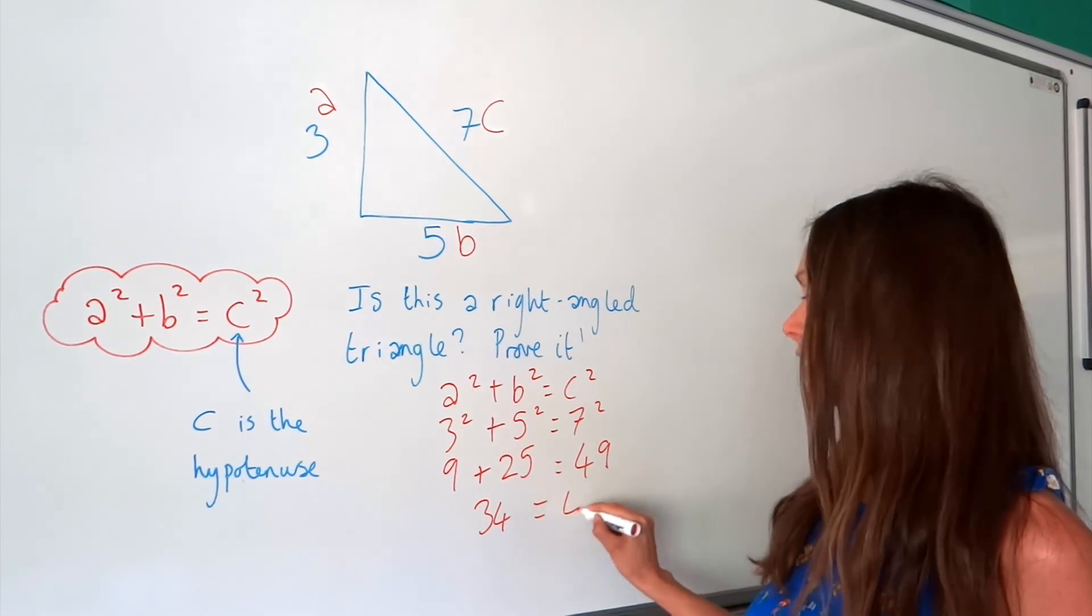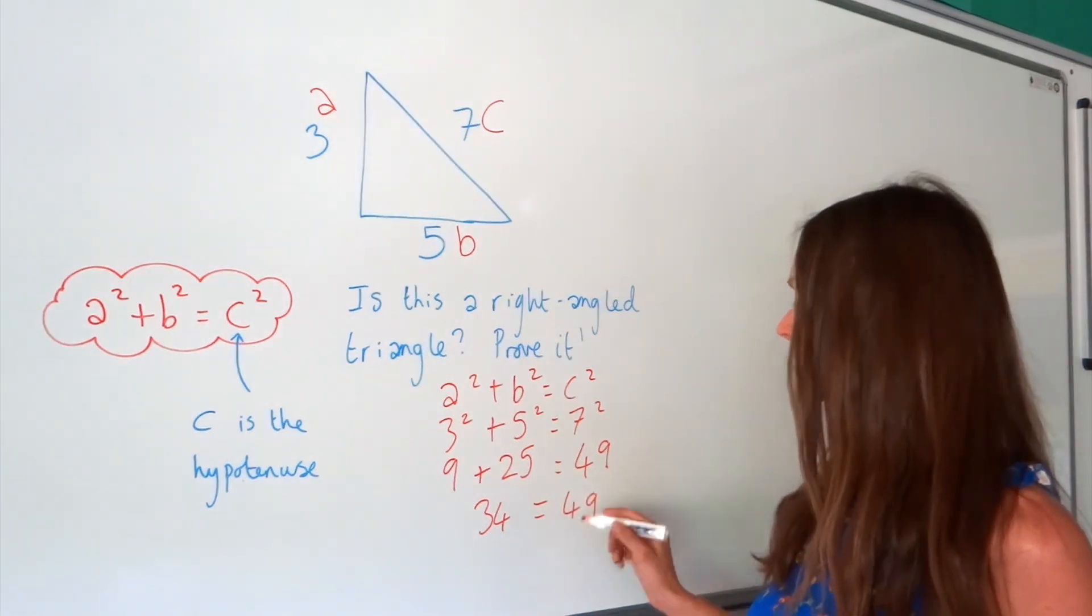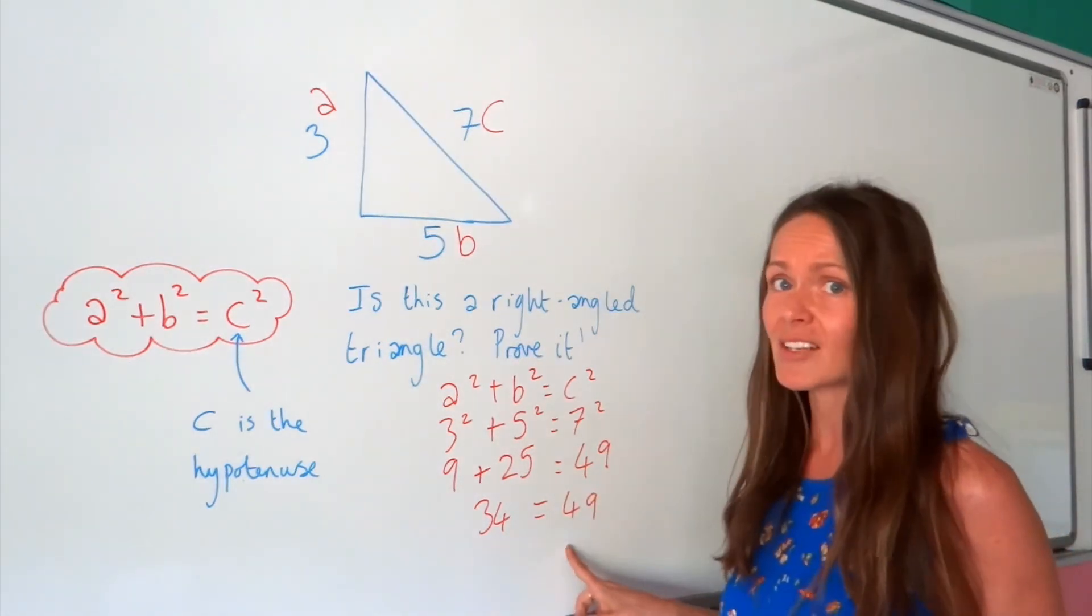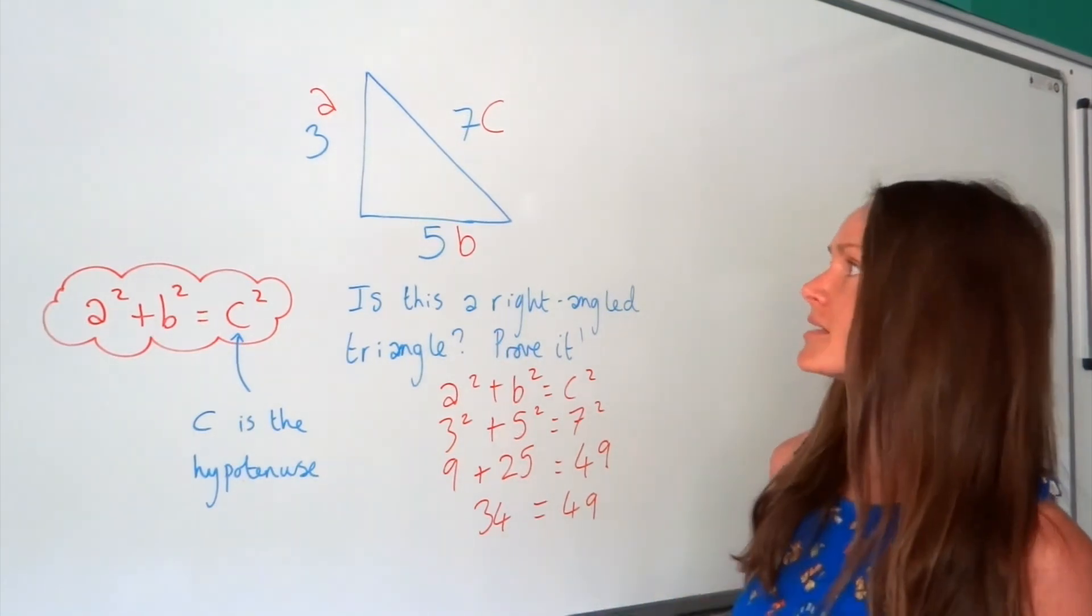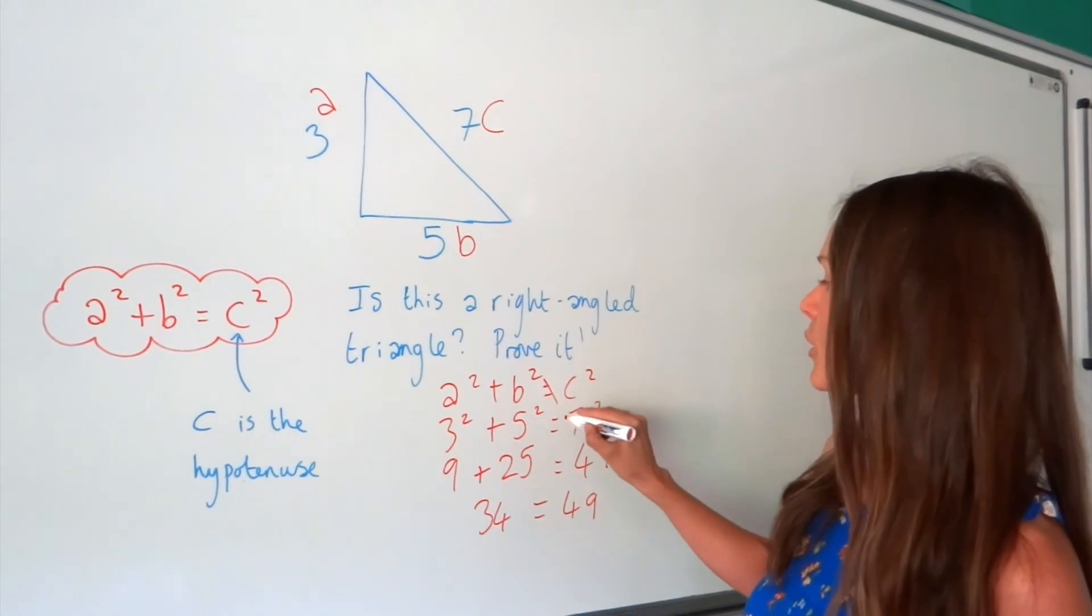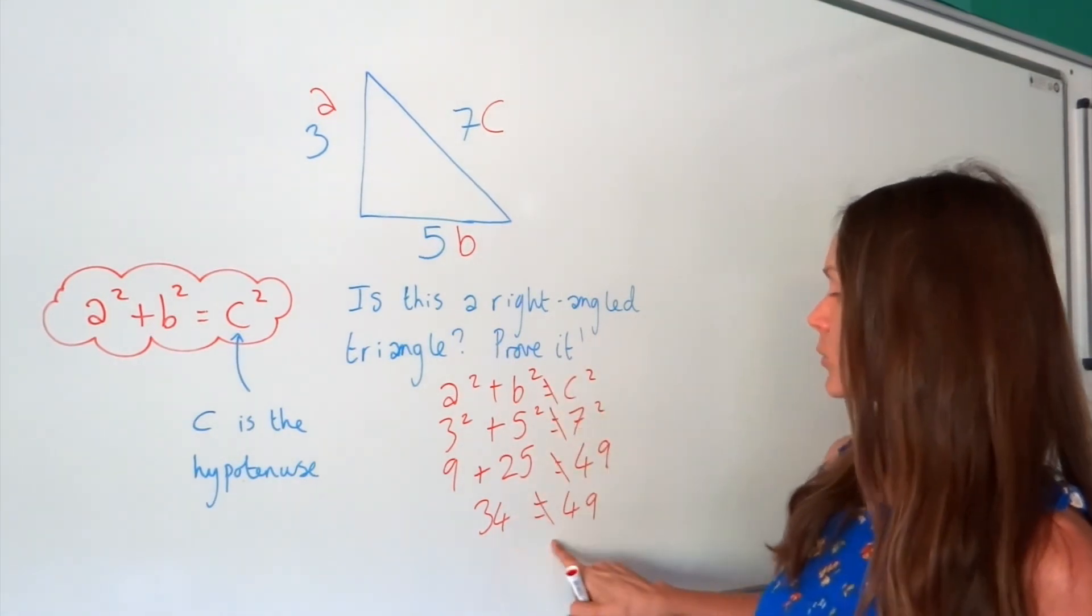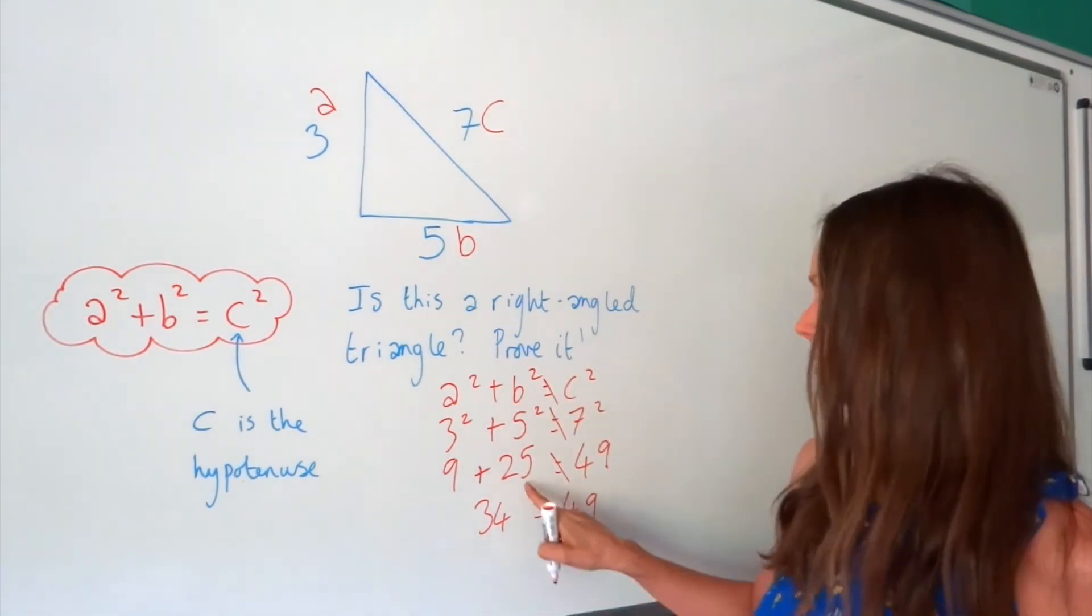And 49 is just 49. And you can see that 34 isn't equal to 49, so it's not true. So Pythagoras' theorem didn't work. They're not equal to each other. That's what that symbol means, the line through the equals.